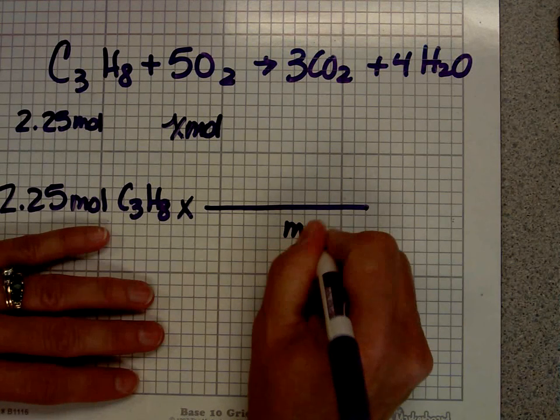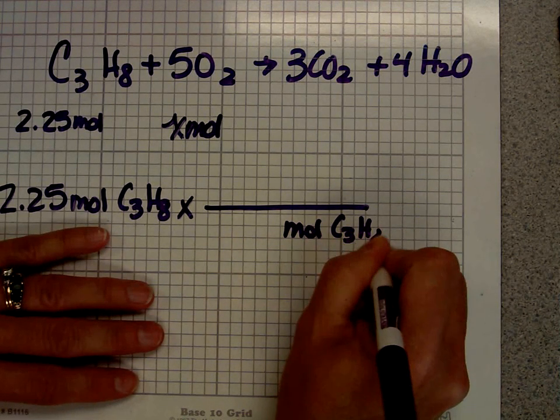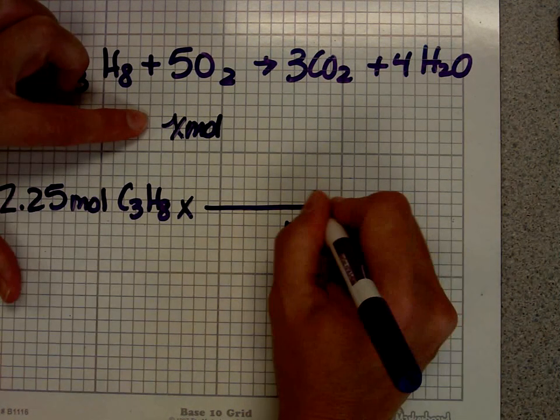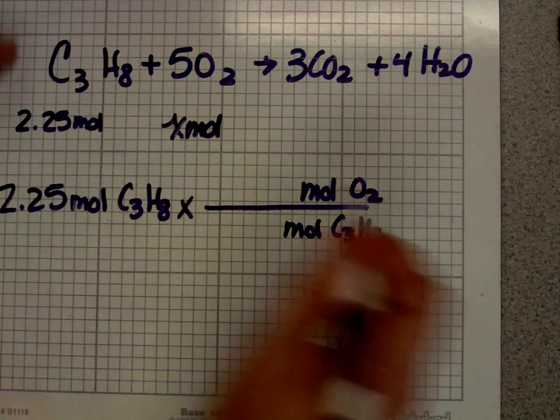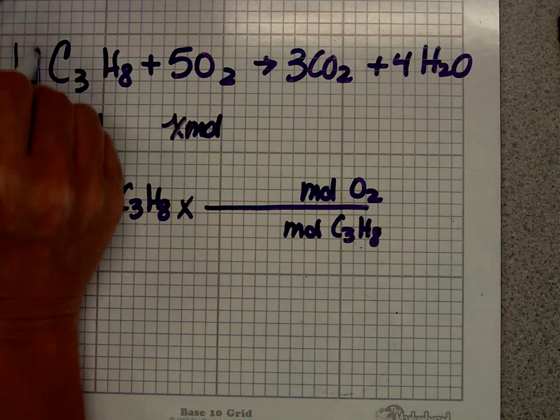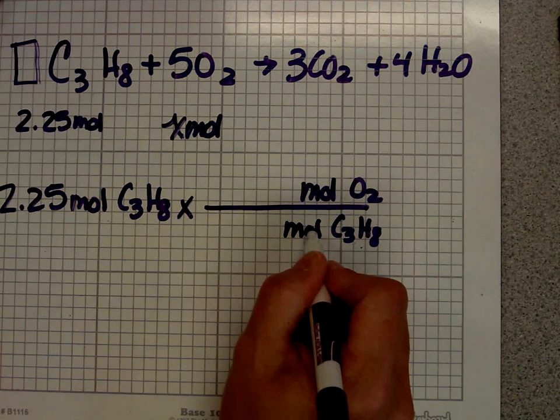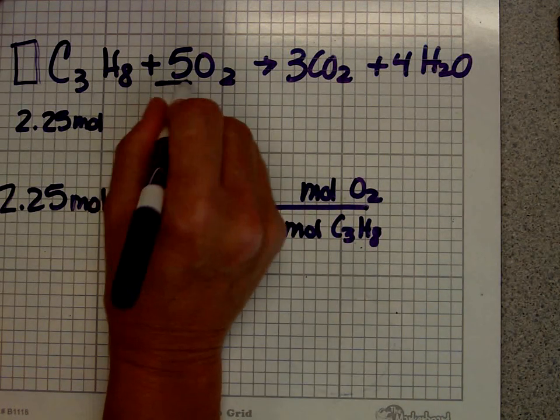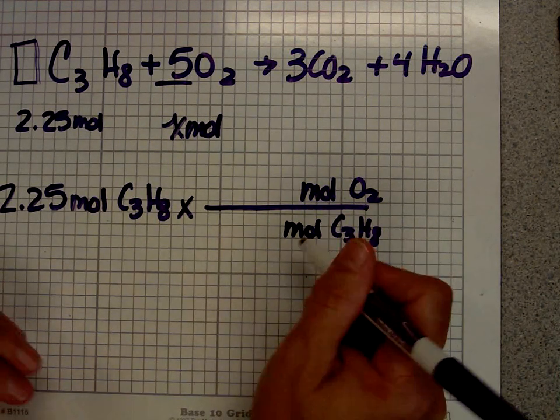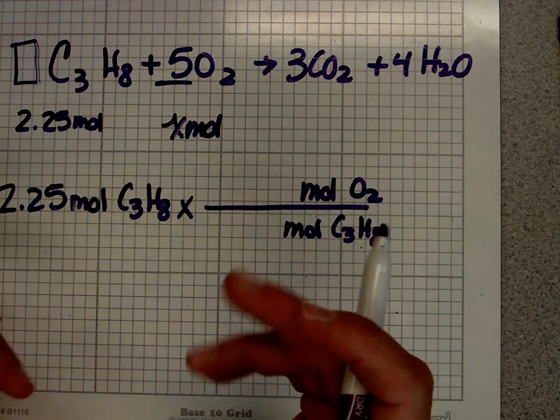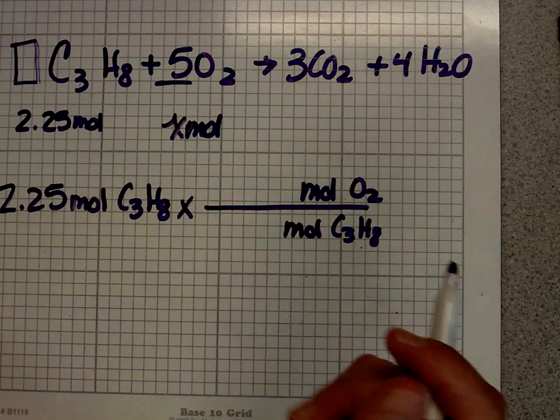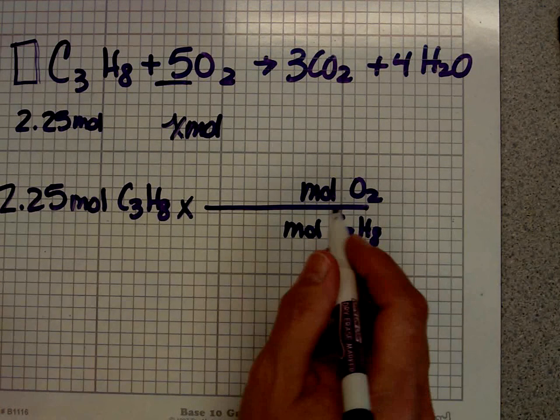I want to get rid of moles of C3H8 and what am I looking for? I'm looking for moles of oxygen. Now, in this case, I'm going to use my recipe. Anytime you have moles over moles, you always use the equation. If it was grams, you'd use the periodic table. If it was liters, you'd use 22.4. But it's moles over moles, so I'm going to use my equation.